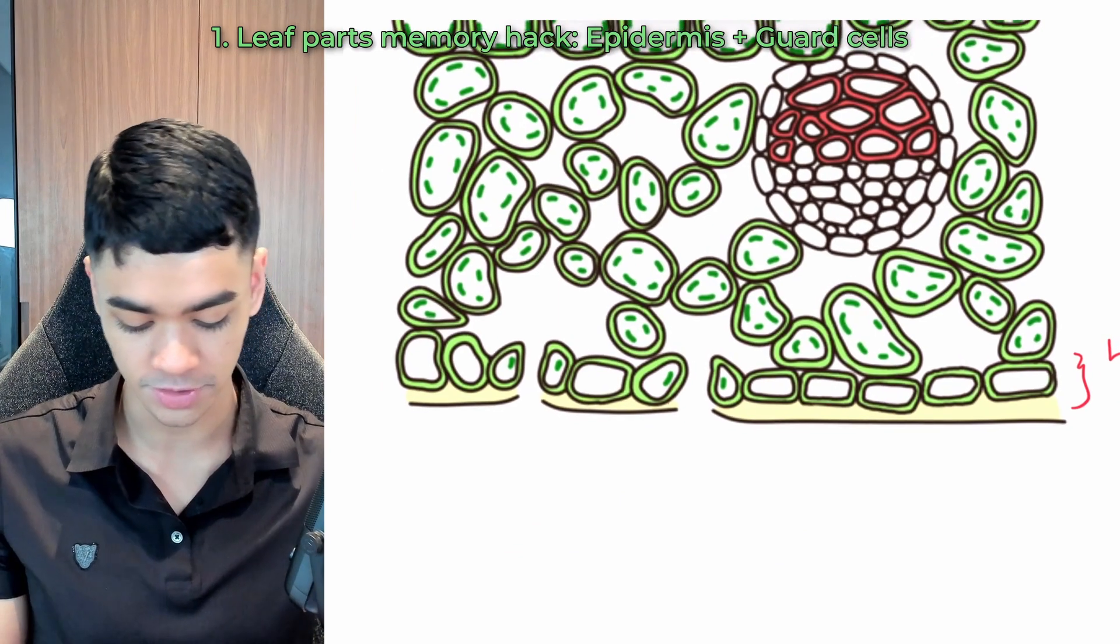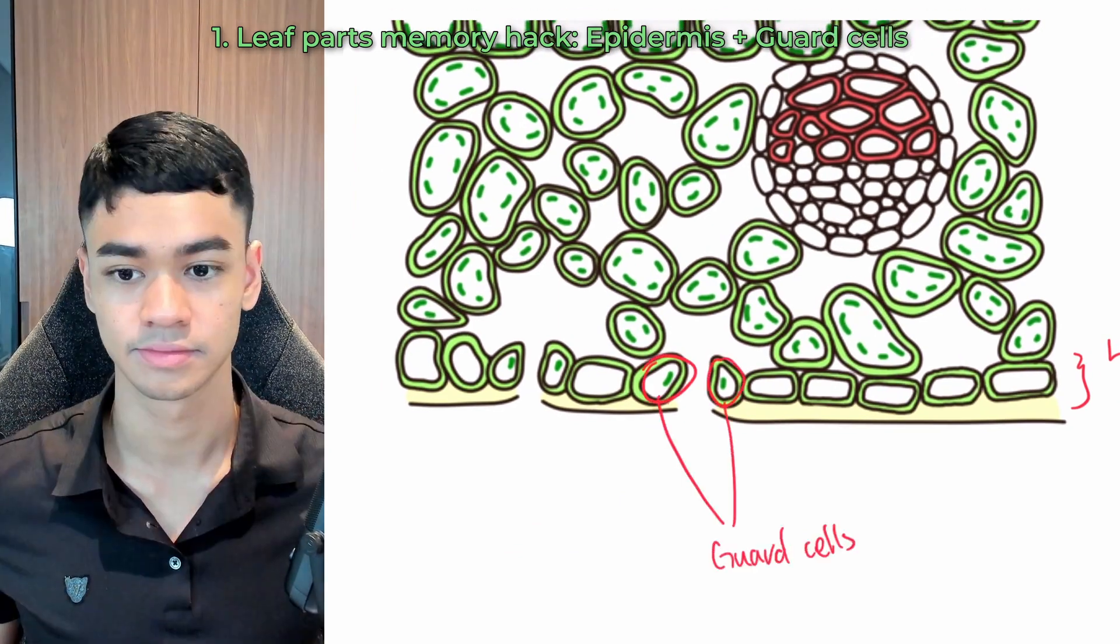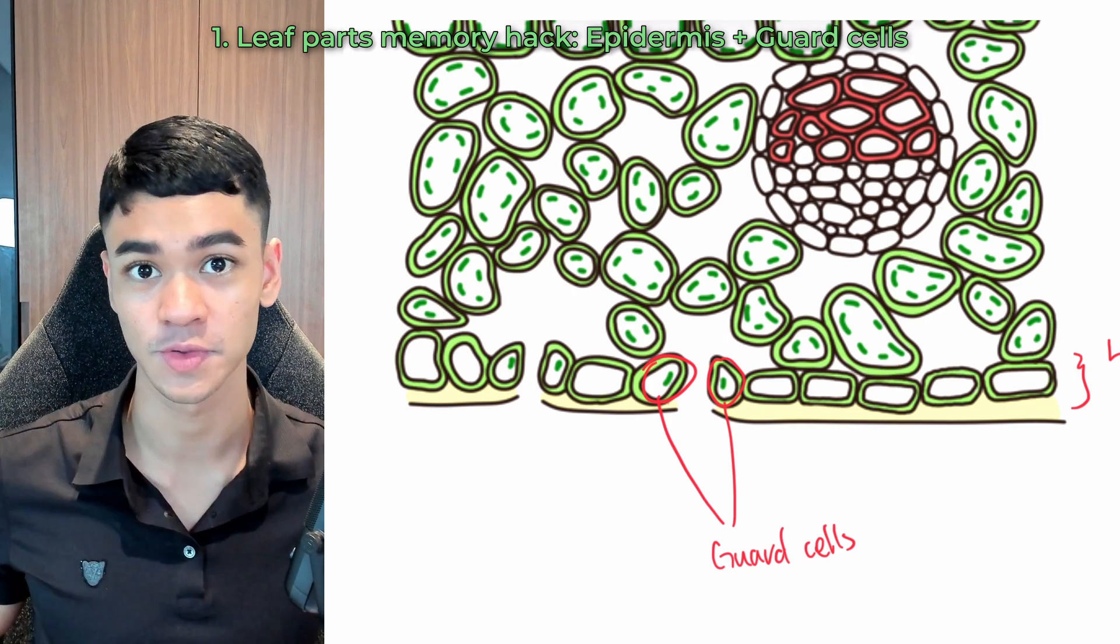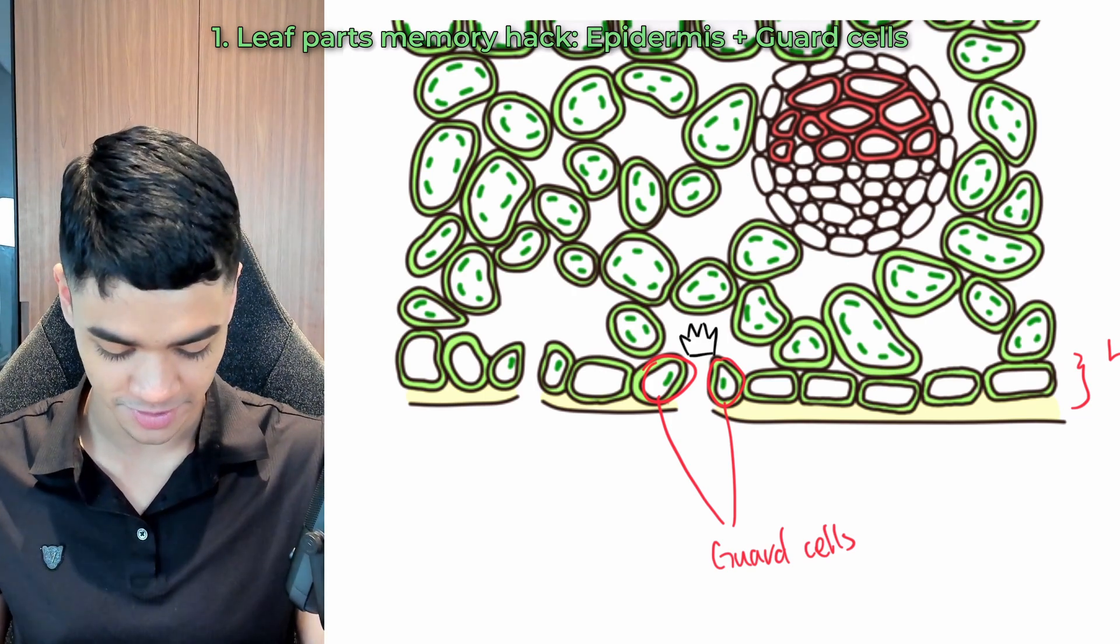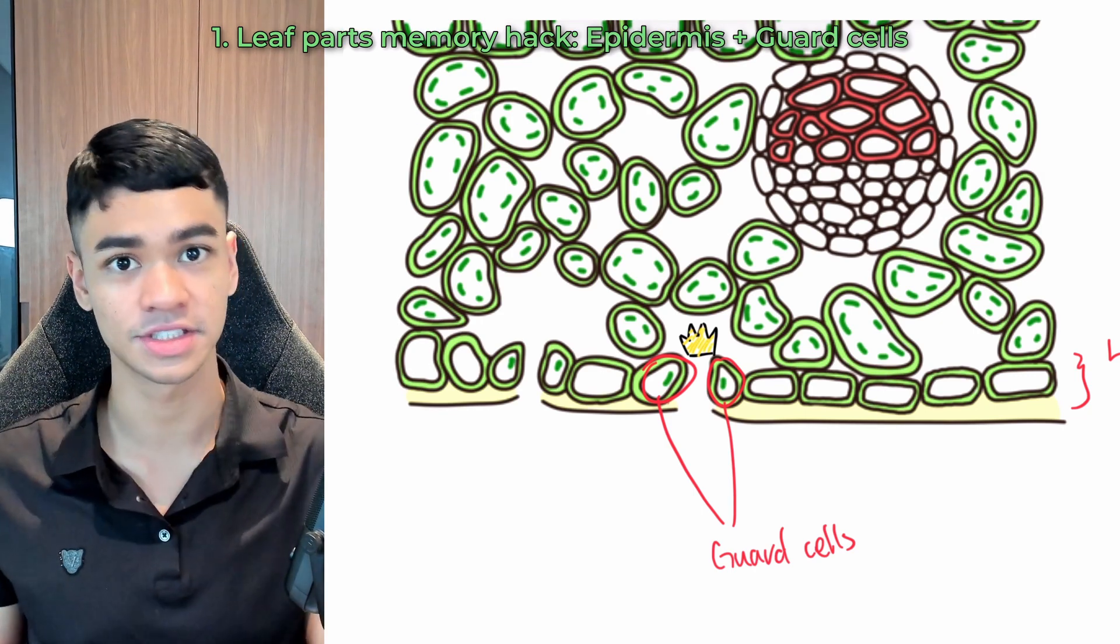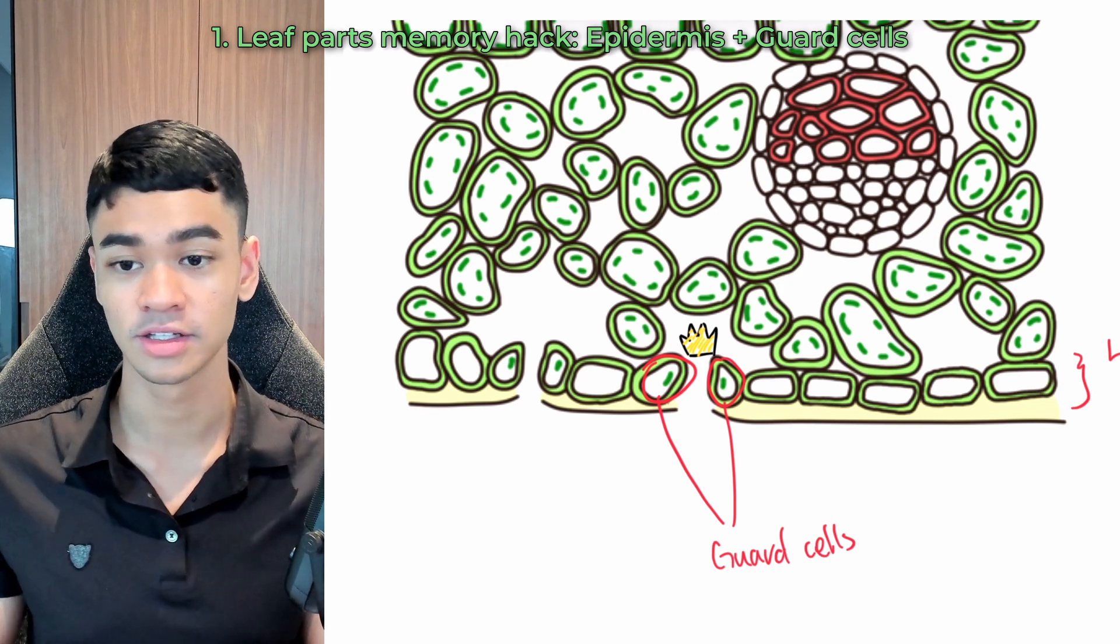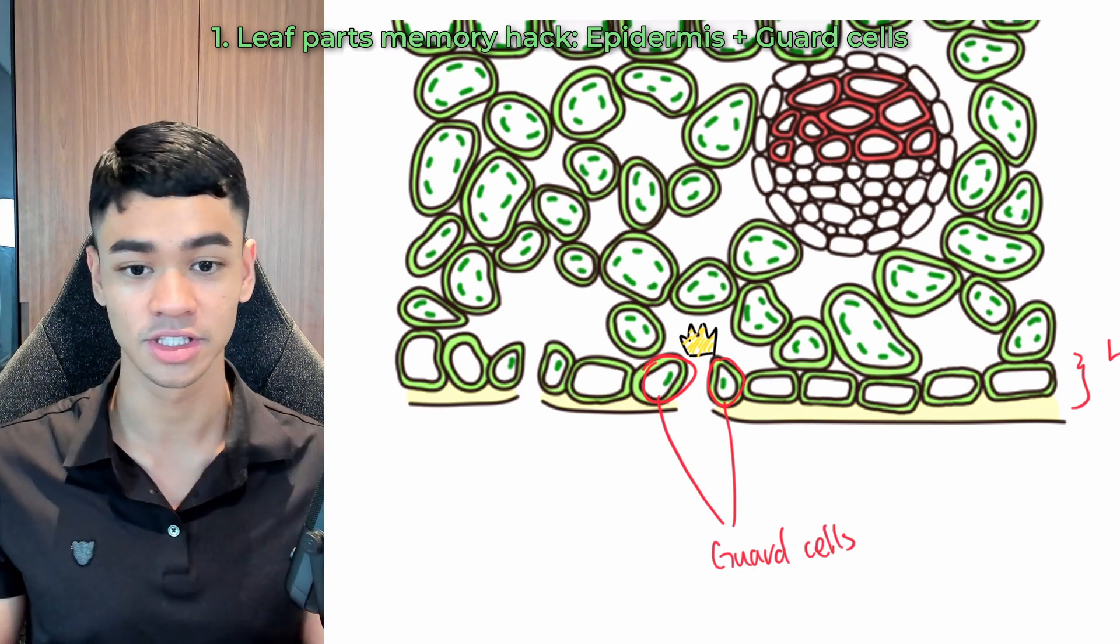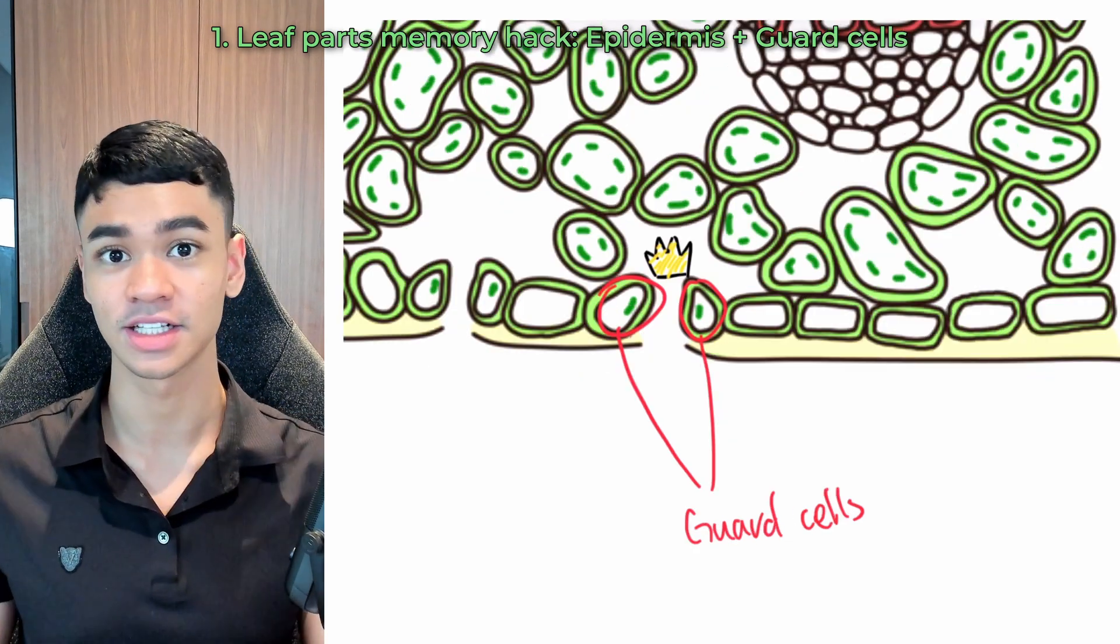For the lower epidermis, you'll also see these special cells here, and they are called guard cells. So how do you remember the name of this one? Well, imagine there's a king sitting in a room. So like here's the room and here's the king in this room. And outside the door, there are two guards stationed there. So the guards control whether people can move in and out of the room, right? Just like how the guard cells control the movement of gases in and out of the leaf. So that's how you remember guard cells.